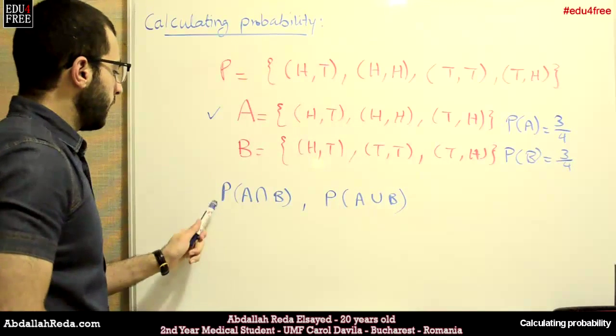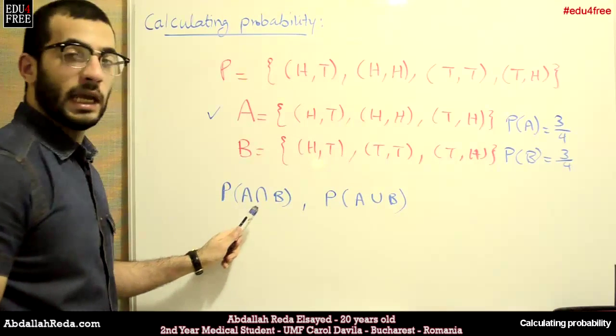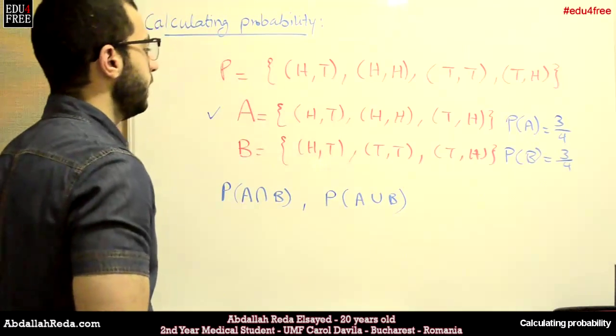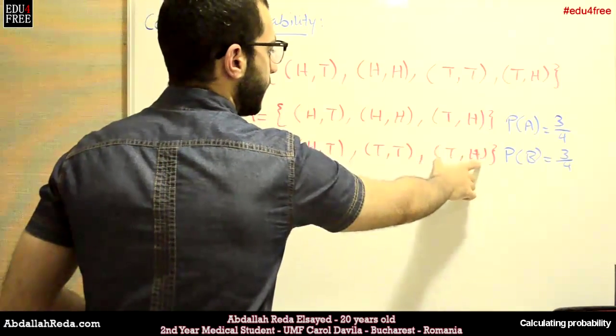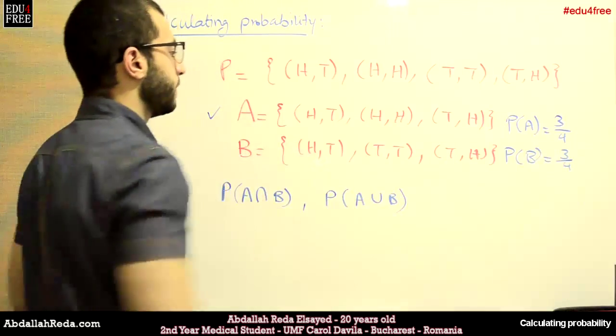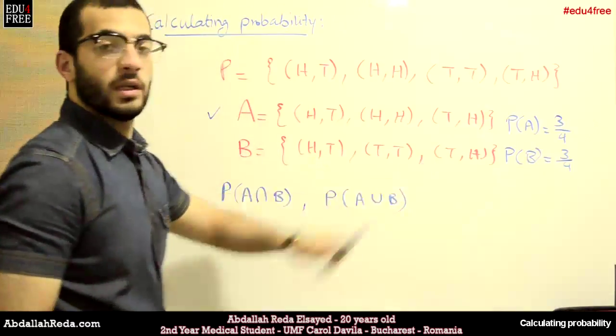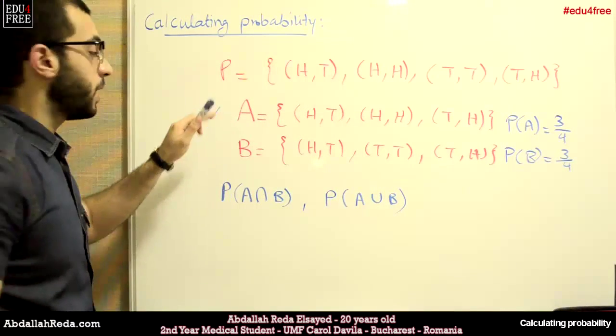Now, P, or the probability of A intersection B. A intersection B are these two elements here. They are repeated. So we have two elements that occur in A and occur in B.